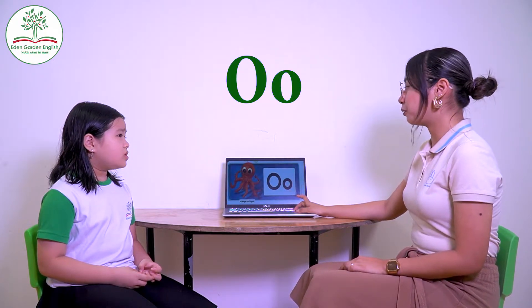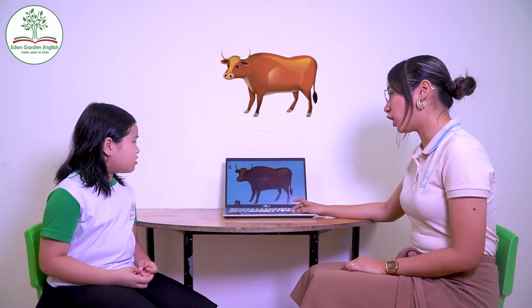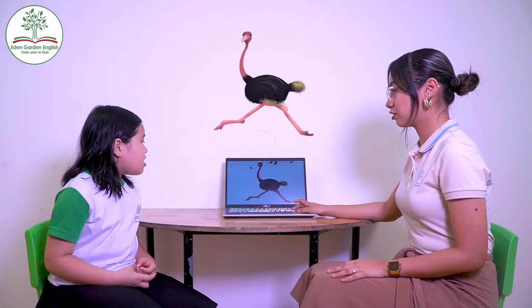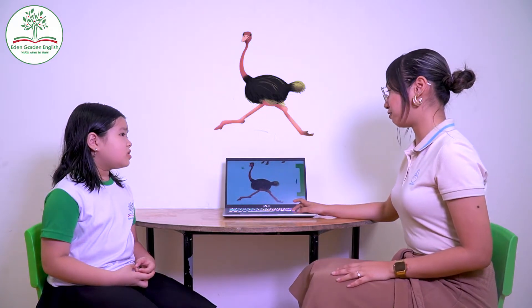Now, let's go to the letter O. Letter O. Now, what is it? Octopus. Octopus. What about this one? It's a... Mouse. Mouse. Yes. What about this one? It's an olive. Olive. Very good. What about this? It's an ostrich. An ostrich. Very good.